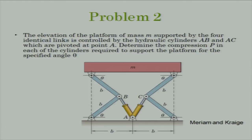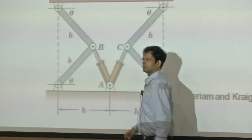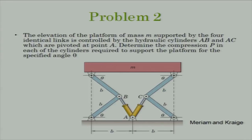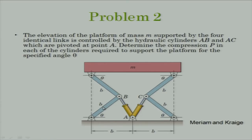It is much more satisfactory if you can have a mechanical, physical picture of how the virtual displacements happen. Direction can be found from the geometry — all the dimensions are given. Note that this angle is B and this angle is B, so this becomes an isosceles triangle. This angle will be 90 minus theta by 2, and this angle will also be 90 minus theta by 2.